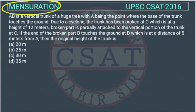This is a mensuration question asked by UPSC in the 2016 paper. AB is a vertical trunk of a huge tree, with A being the point where the base of the trunk touches the ground. Due to a cyclone, the trunk has been broken at C, which is at a height of 12 meters.